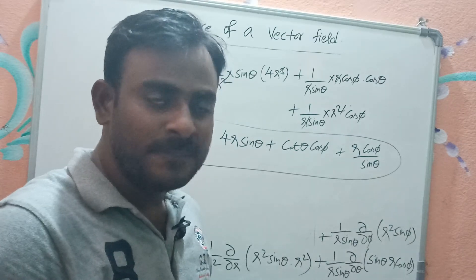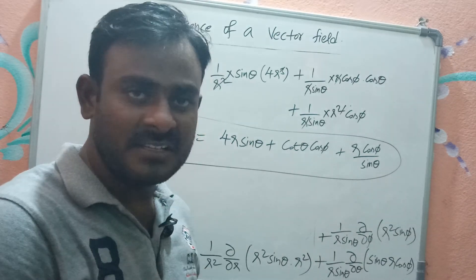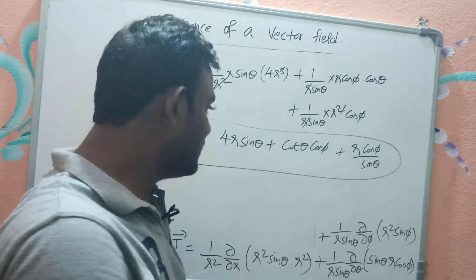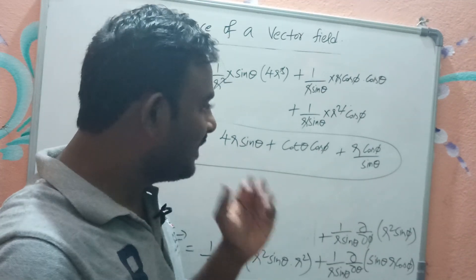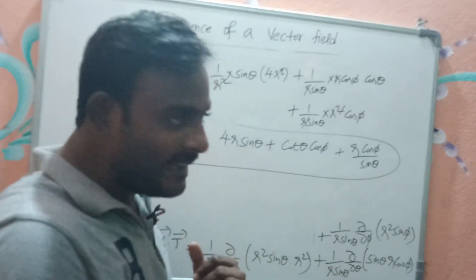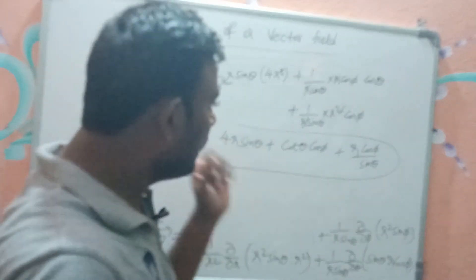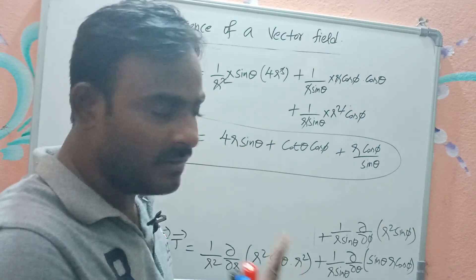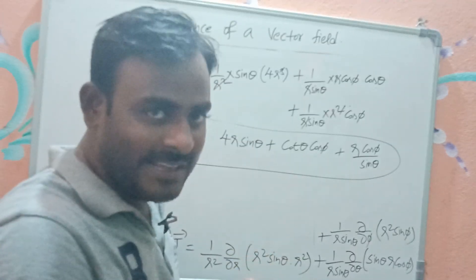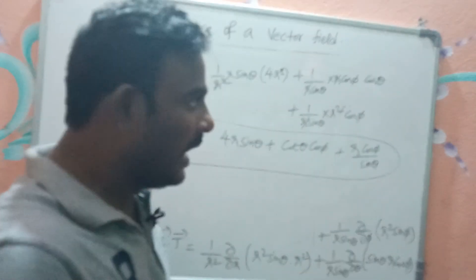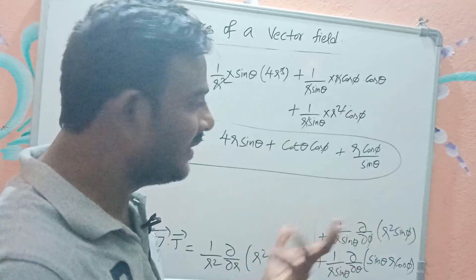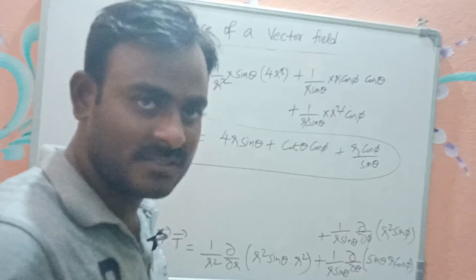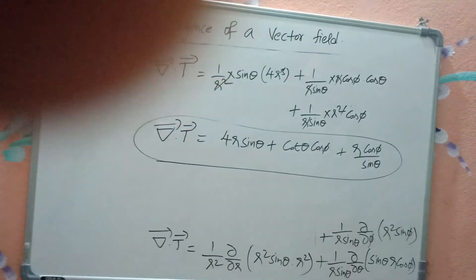In this way we can find the divergence in Cartesian, cylindrical, and spherical coordinate systems. The key step is to identify the components of the vector in x-y-z, rho-phi-z, or r-theta-phi directions, and then substitute them into the basic divergence formula for that coordinate system. Thank you very much.